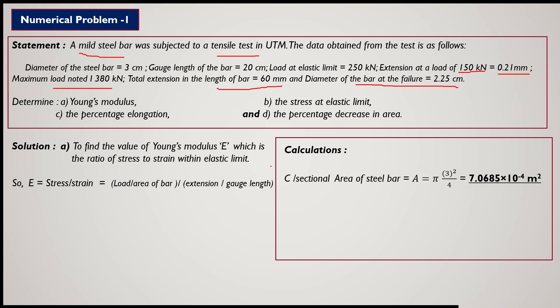For the calculation, first we find the cross-sectional area of the steel bar. The initial diameter is given, so applying the formula π d² / 4 we get the area. We calculate the area in meters squared, and throughout the calculation we will use meters as the dimension for length and meters squared for area.